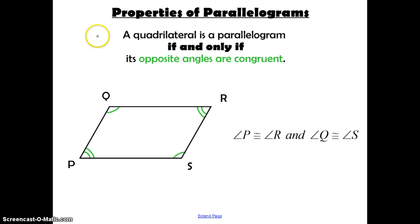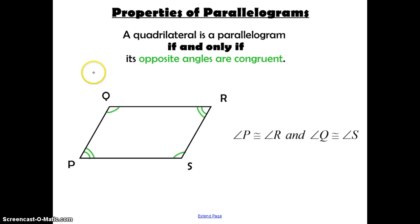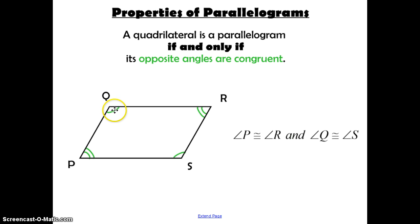The second property states that a quadrilateral is a parallelogram if and only if its opposite angles are congruent. Angle P is congruent to its opposite angle R, and angle S is congruent to its opposite angle Q.